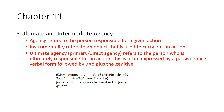Ultimate and intermediate agency. Agency refers to the person responsible for a given action. Instrumentality refers to an object that is used to carry out an action. Ultimate agency — which you could also refer to as primary agency or direct agency — refers to the person who is ultimately responsible for an action. This is often expressed by a passive voice verbal form followed by hupo (ὑπό) plus the genitive.